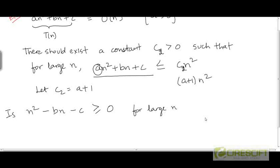Is this true? Is n² - bn - c greater than or equal to 0 for large n?